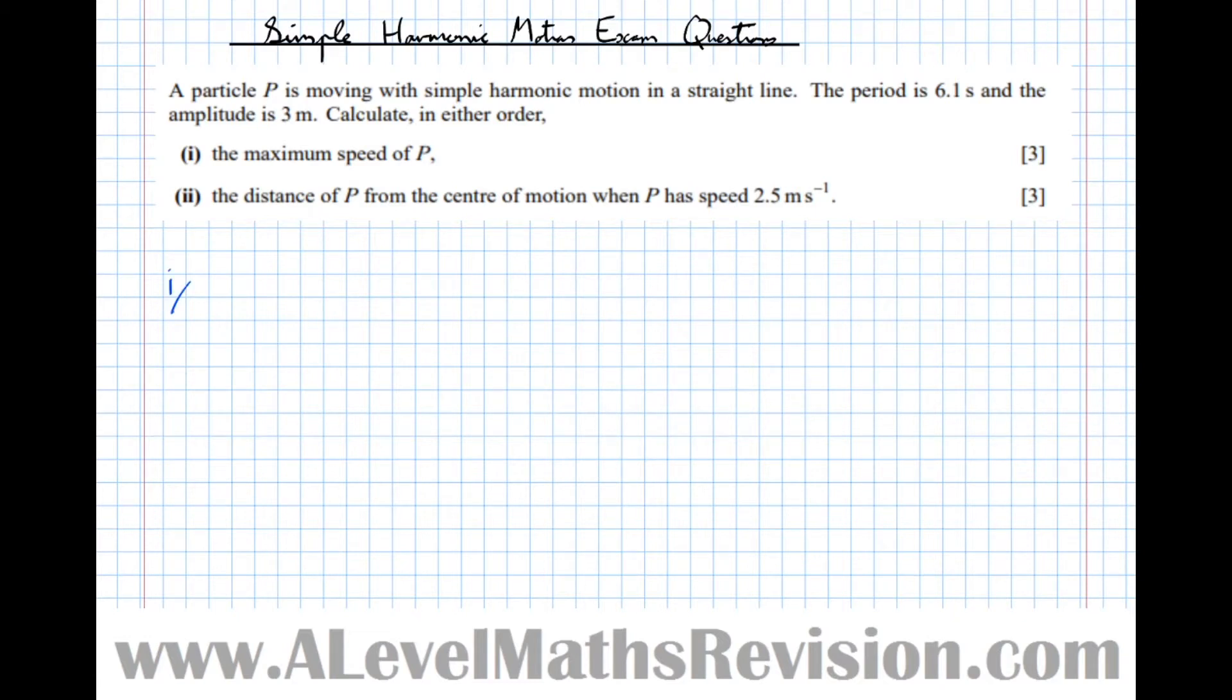Assuming that the particle starts its motion at the origin, we know that the general solution to a differential equation that represents simple harmonic motion is x equals r sine of omega t where omega dictates the period and r dictates the amplitude. We know the amplitude is 3 so we get x equals 3 sine, and since the period is 6.1 then the multiplier is 2 pi over 6.1 t.